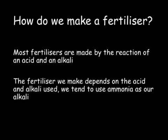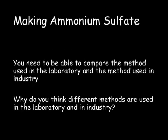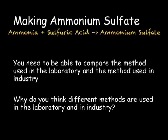So how do we make a fertiliser? Most fertilisers are made by the reaction of an acid and an alkali — this is a neutralisation reaction. The fertiliser we make depends on the acid and alkali used; we tend to use ammonia as our alkali. Our reaction for making ammonium sulfate is: ammonia plus sulfuric acid makes ammonium sulfate. The balanced equation is 2NH₃ + H₂SO₄ → (NH₄)₂SO₄.